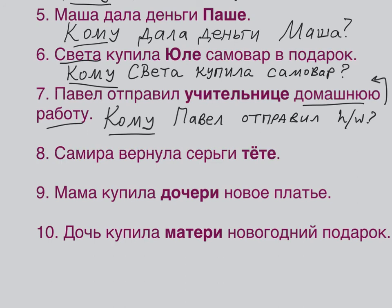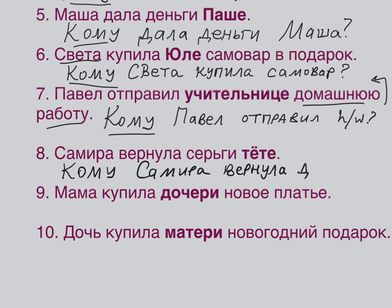Number 8: САМИРА ВЕРНУЛА СЕРЬГИ ТЁТЕ — Samira returned earrings to her auntie. Question: КОМУ САМИРА ВЕРНУЛА СЕРЬГИ? Answer: ТЁТЕ. Note: in nominative it's ТЁТЯ, but in dative it's ТЁТЕ.